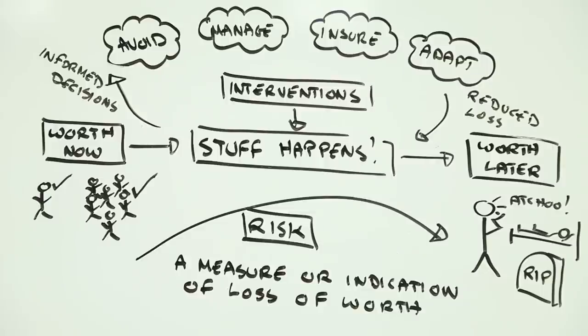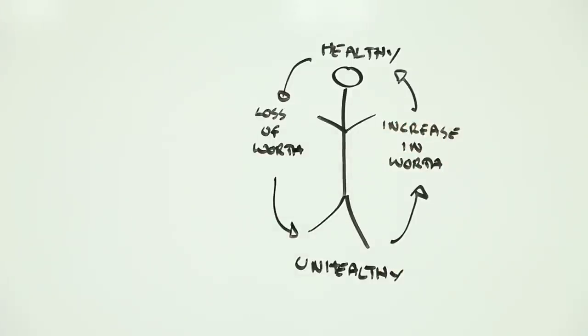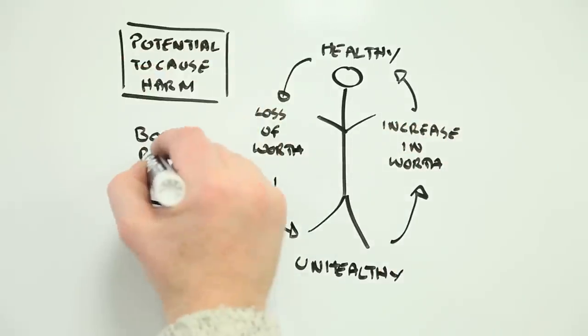However, calculating health risk is not easy. To come up with a number, we need to understand the innate potential of things to cause harm, as well as how much of them causes what specific harm.